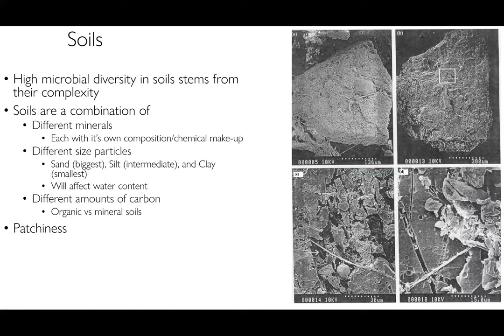Soils are extremely complex — the soil aggregates have many different particles, each with very different chemistry, and microbes are almost always susceptible to the chemistry of their environment. In these electron micrographs of soil — at scales of 15, 136, and 300 microns — even on one grain of soil you notice a very heterogeneous surface with lots of different crevices and cracks. This creates an enormous amount of patchiness. Compare this to a rubber ball, which is very homogeneous — soils are the opposite: very heterogeneous.